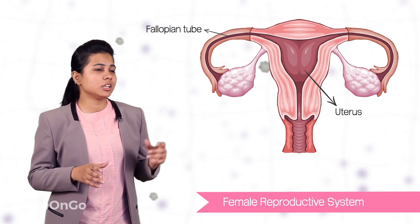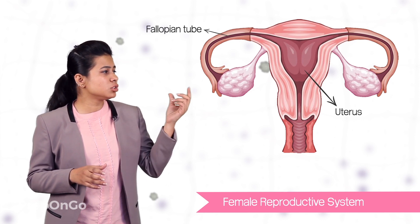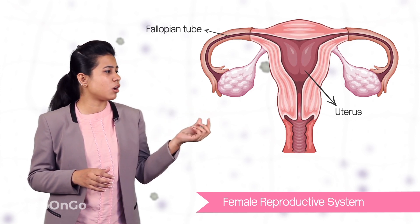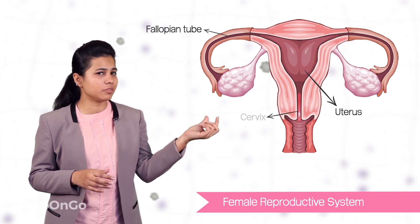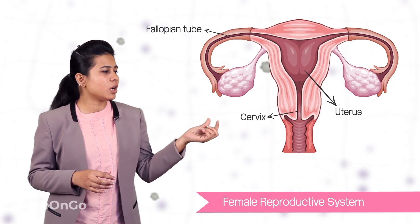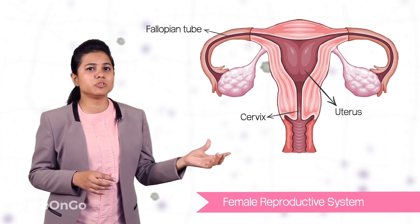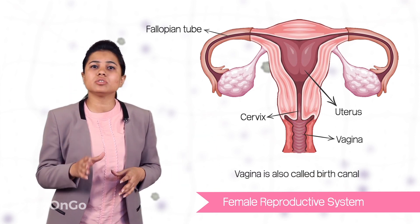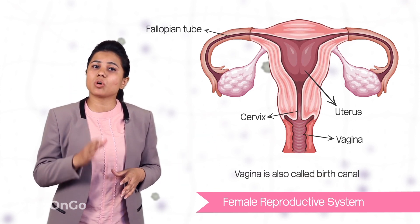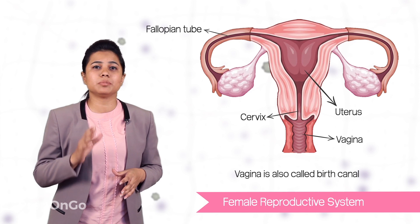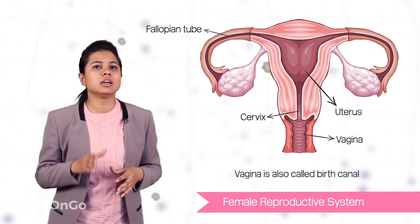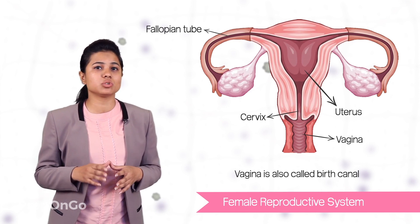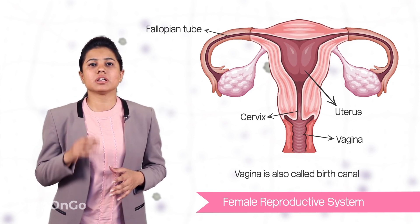The uterus opens into a narrow passage which is called as cervix to another tube which is called as vagina. The vagina is also called as the birth canal as it is through this passage only that the baby is born.